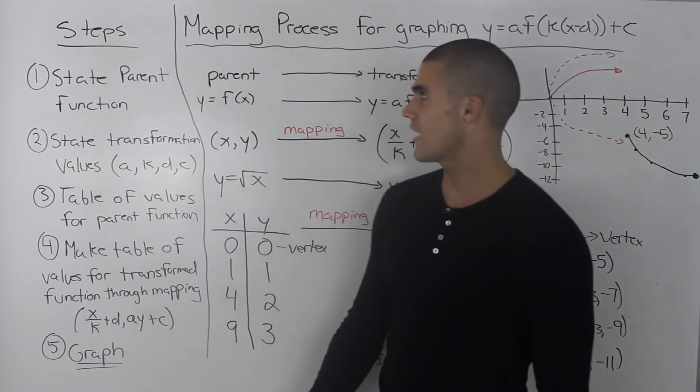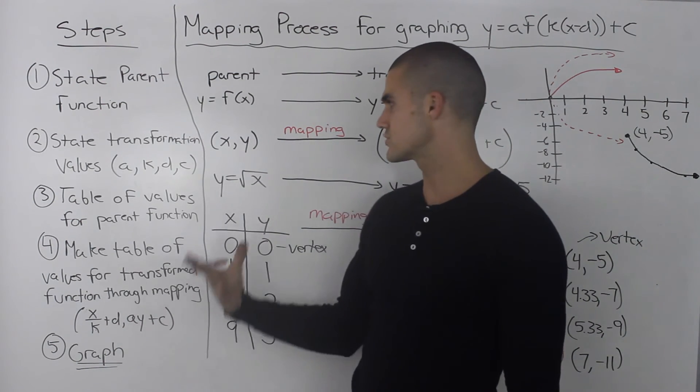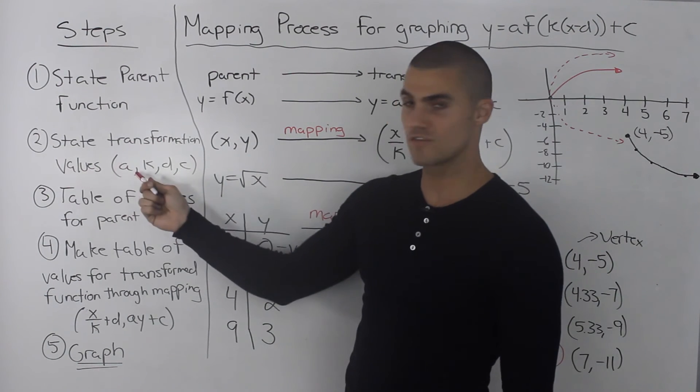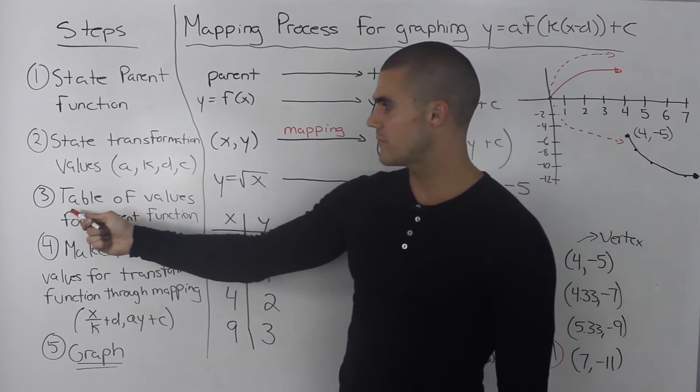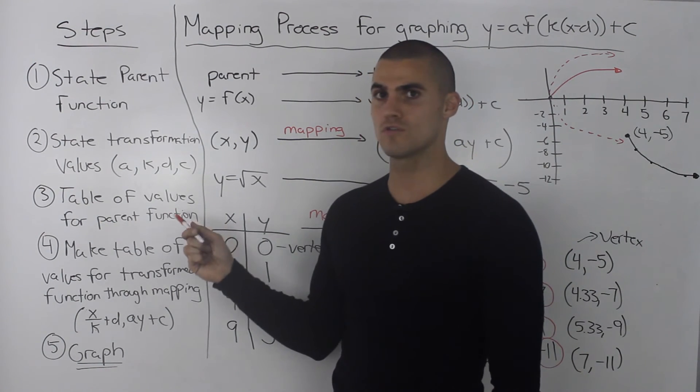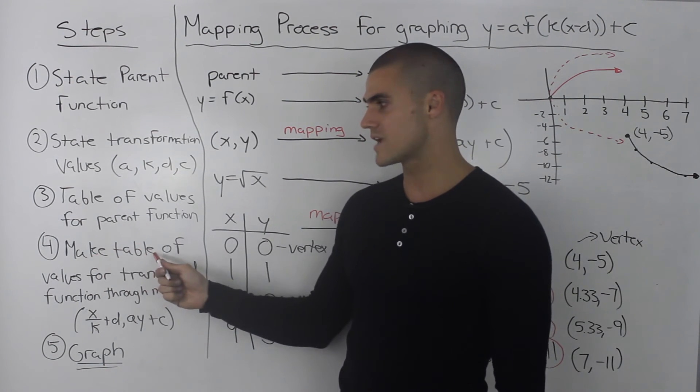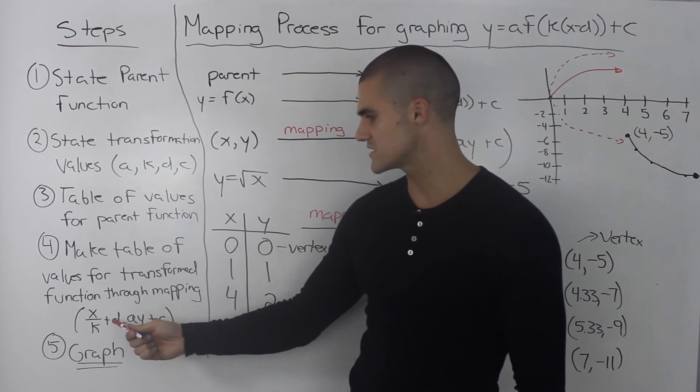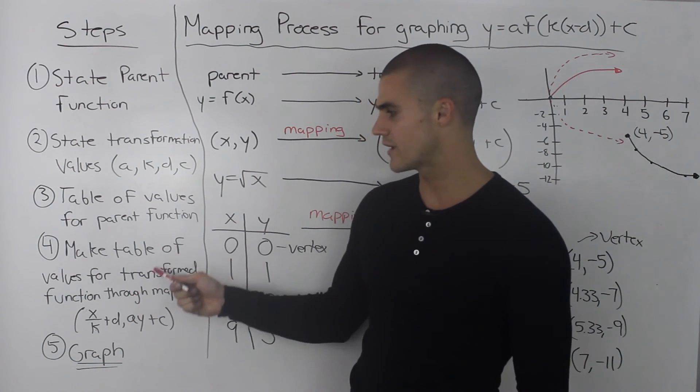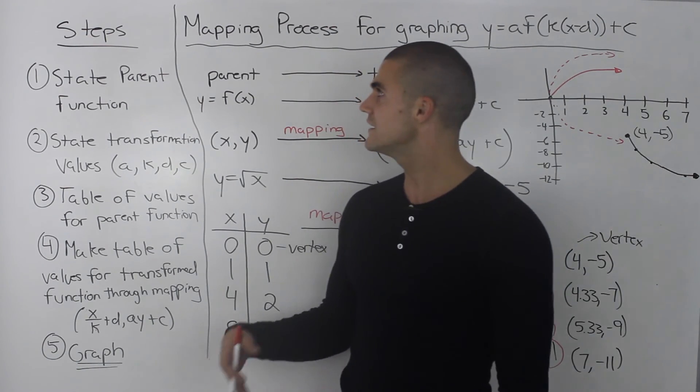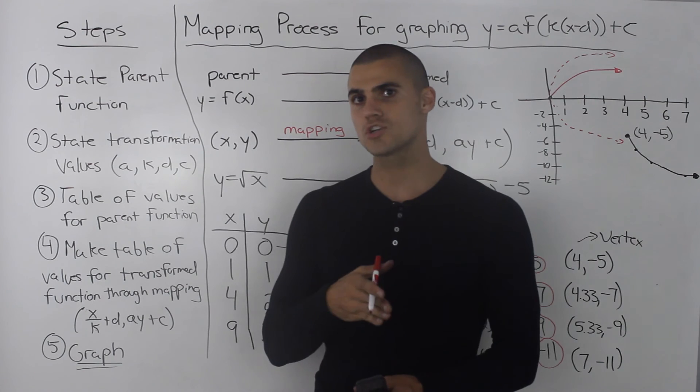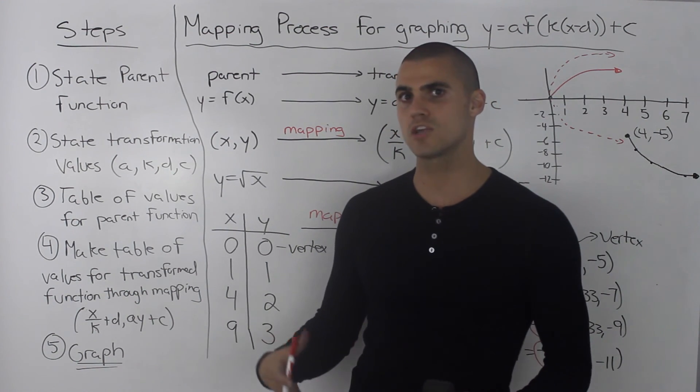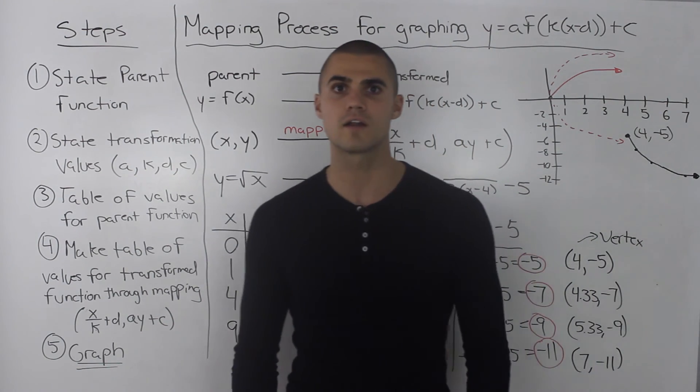Let's conclude the video with a general list of steps that we undertook to graph a transform function. The first step that we took was we state the parent function. Then we state the transformation values, the a, k, d, and c. Then we make a table of values for the parent function, which is already given to you from the videos that we did before. Then we make a table of values for the transform function through the mapping process, using this formula x over k plus d, a y plus c. Then we take that table of values of the transform function and we graph. In the next few videos, we're going to follow these steps for each of the parent functions. There's going to be a couple of videos where we'll get a lot of practice with these steps, just to get you really comfortable with this process because you will be getting tested on it for sure.